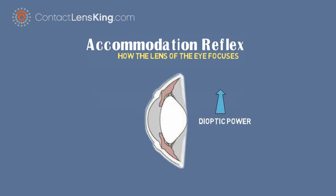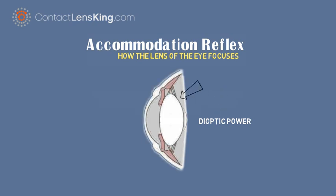When the ciliary muscle relaxes, the zonular tension increases, flattening the lens to decrease its dioptric power.